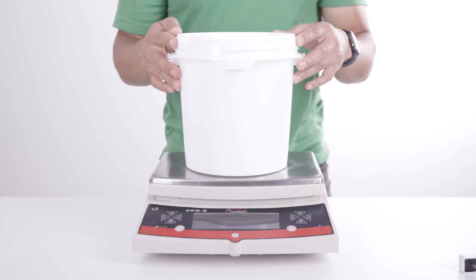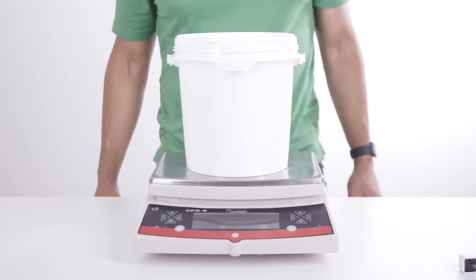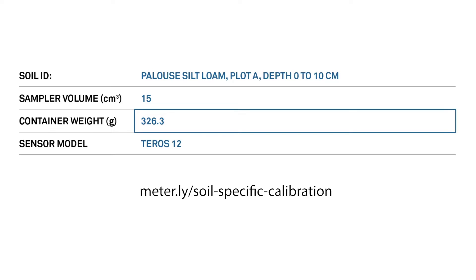Begin by measuring the mass of the clean, dry calibration container. Record the tare mass in the calibration spreadsheet entitled Table 1, Method A. Table 1 can be downloaded at the web address below. It automatically calculates the calibration function after you enter in all the values.